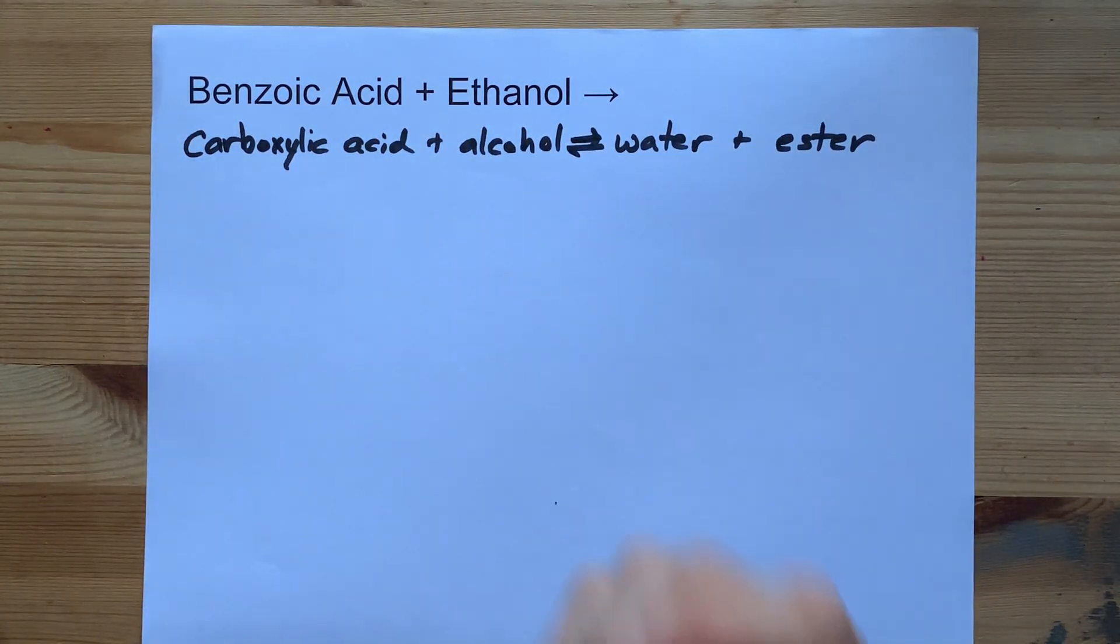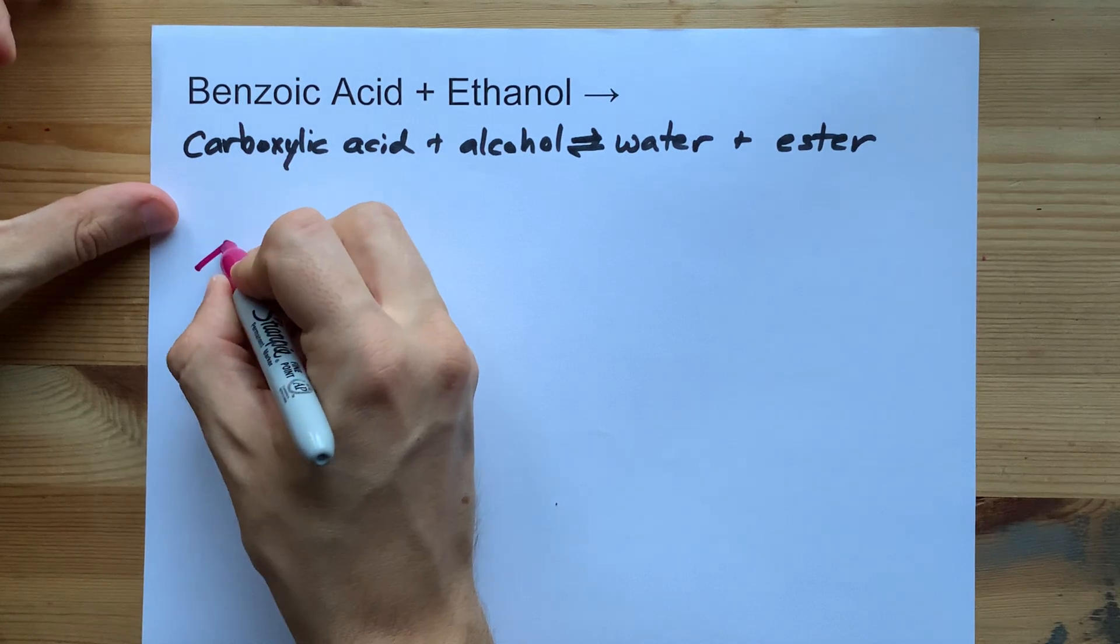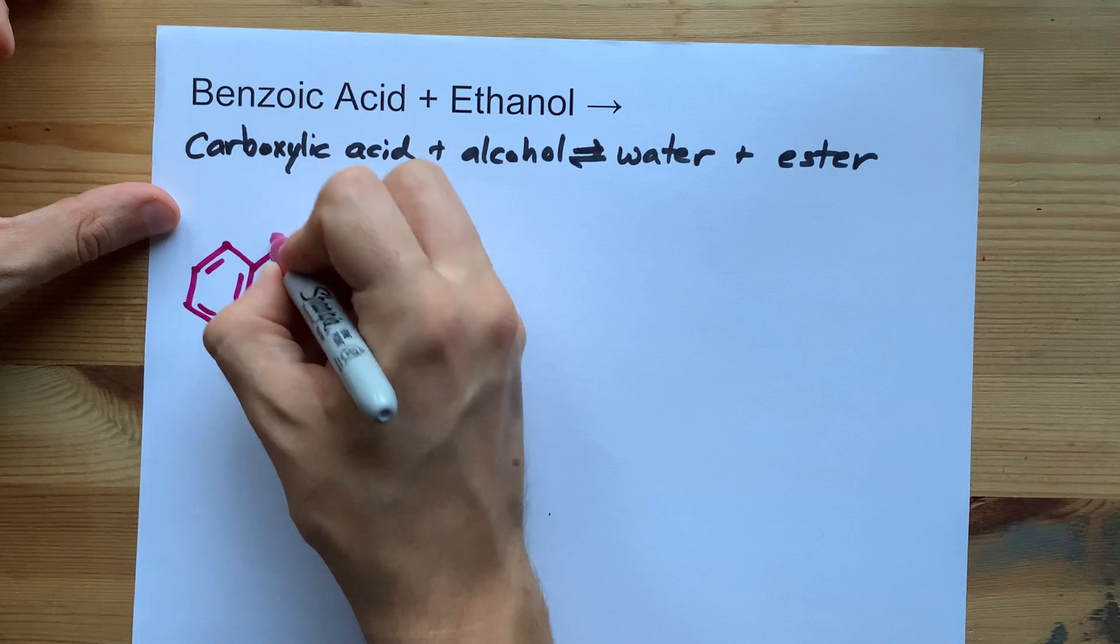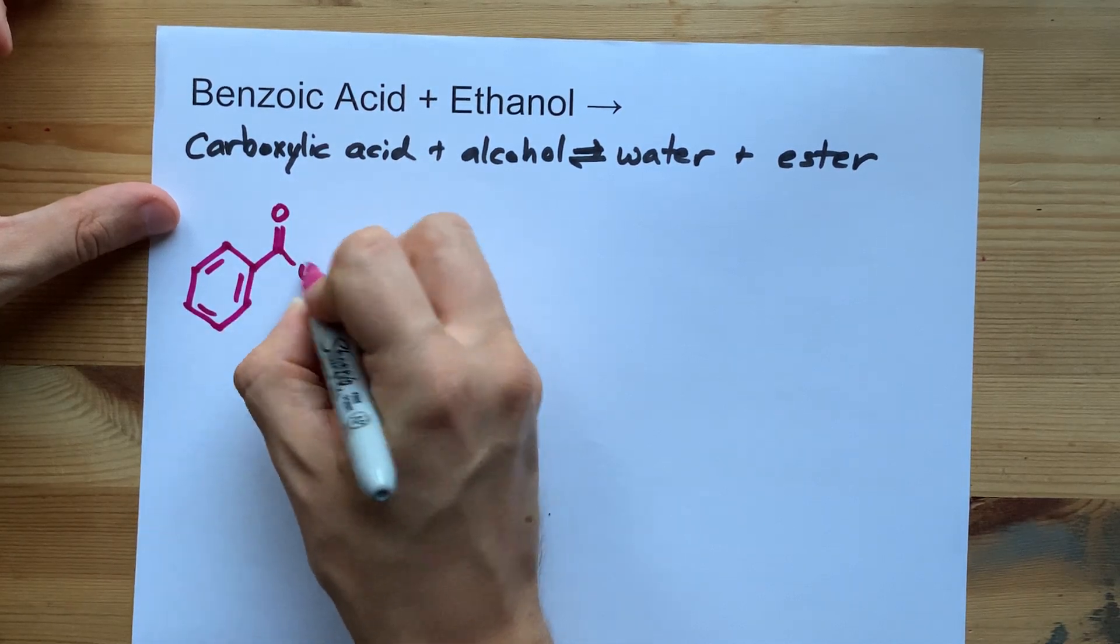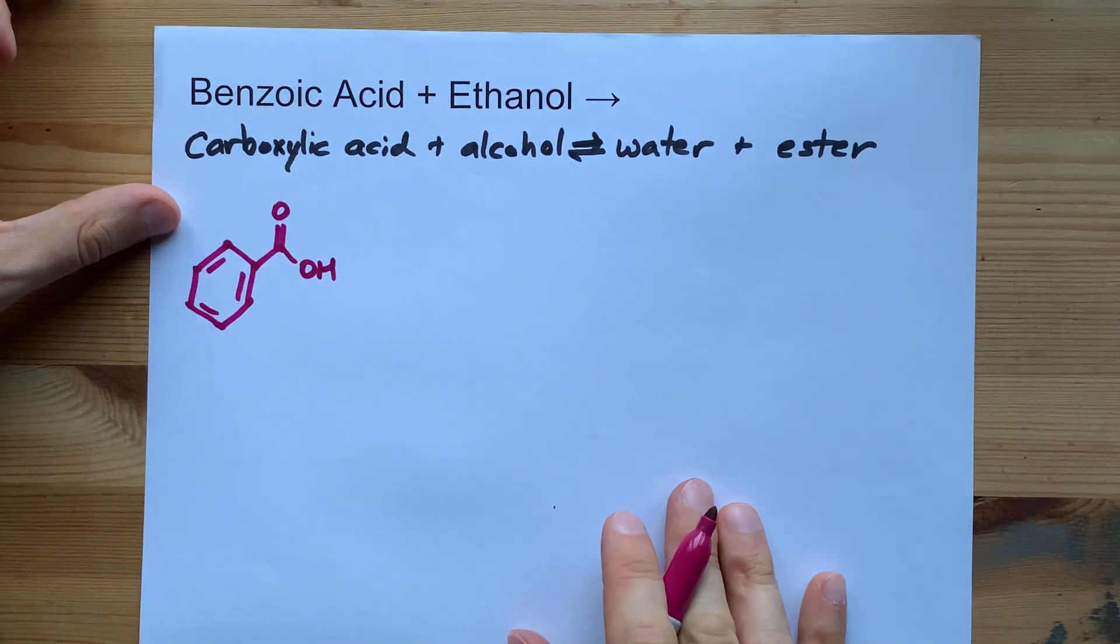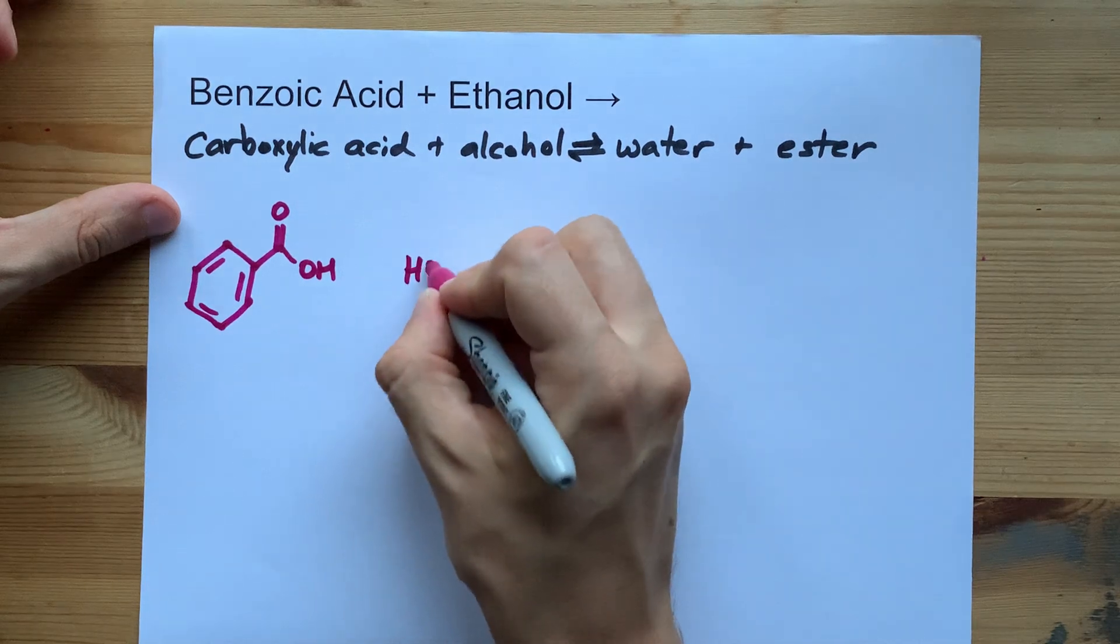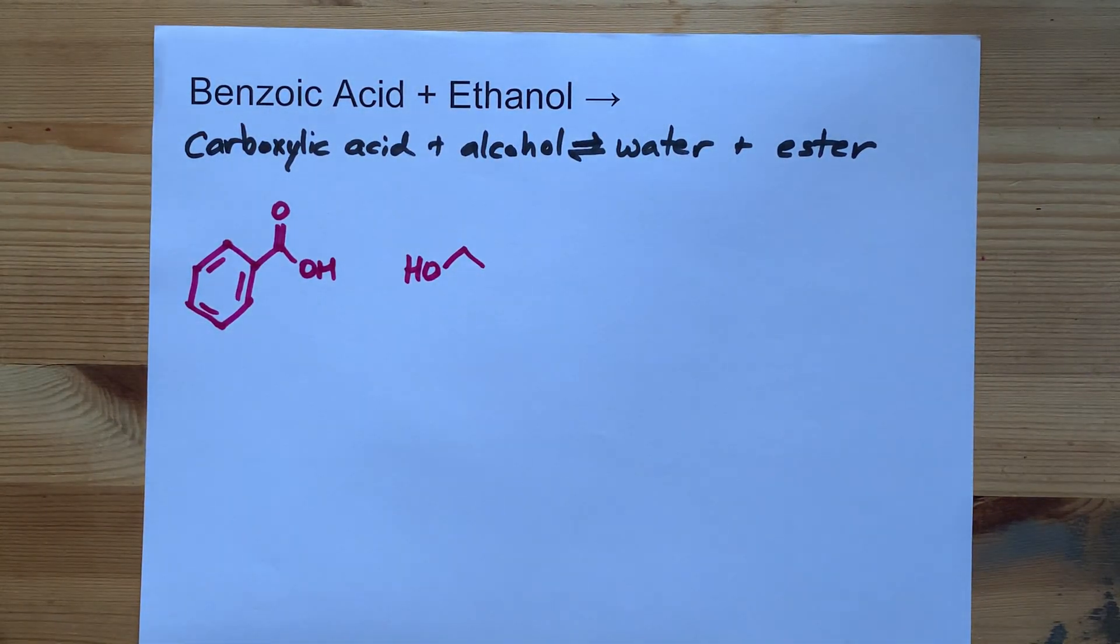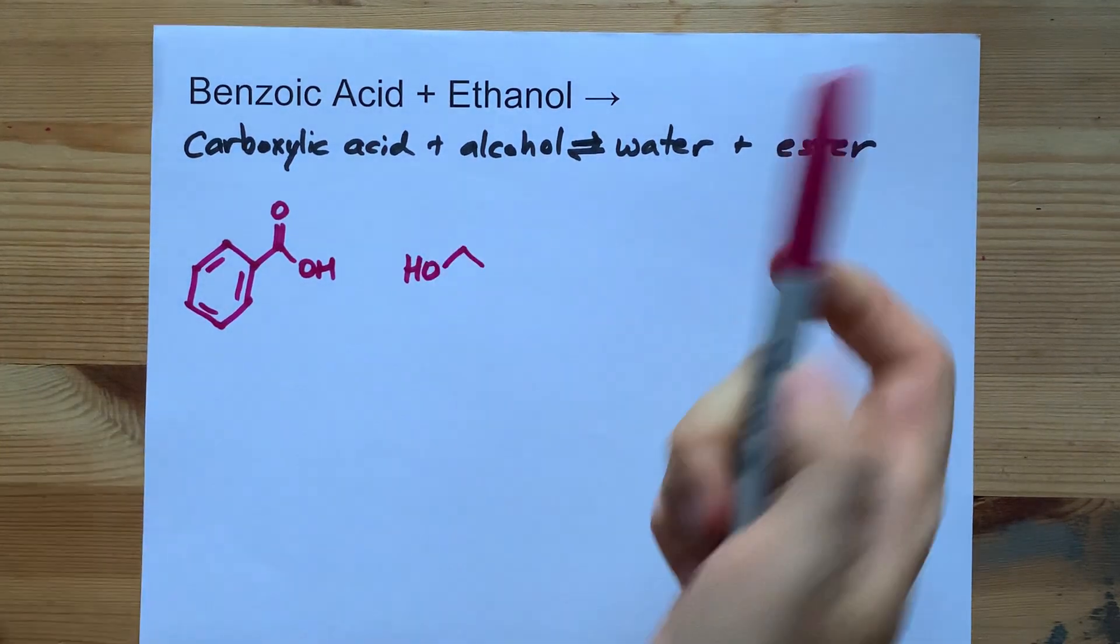Let's draw it out so you can visualize it. Benzoic acid is a benzene ring that has an extra COOH connected to it. And ethanol is an alcohol that has a two carbon chain attached to it, or rather it's a two carbon chain with an OH on it.